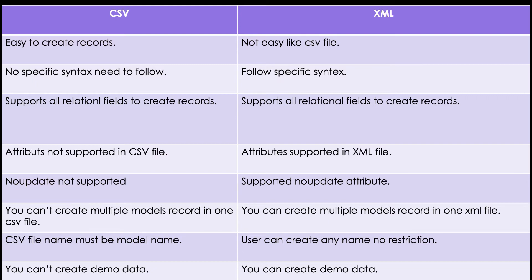In the XML side, there is no restriction on the file name — you can name it the same as the model or create your own name; there are no specific naming rules for XML data files. Also, in the CSV side you cannot create demo data, whereas in the XML side you can create demo data using the `demo` key in the manifest file.